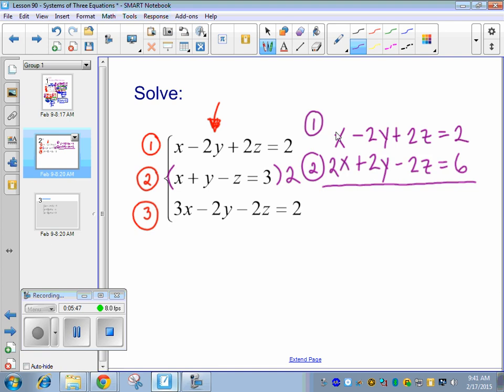All right, something interesting is going to happen. So what do I get for my x's? 3x. What happens to my y's? What happens to my z's? What happens over here? 8. All right, so we end up just getting x.